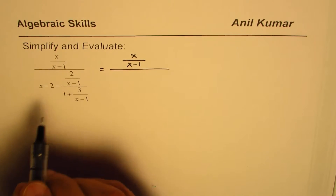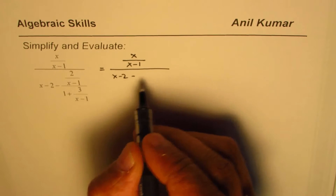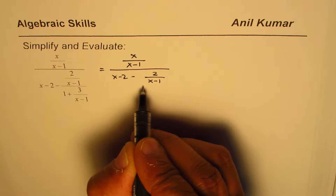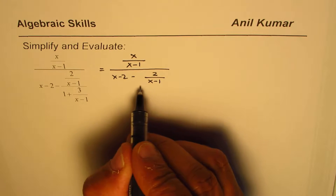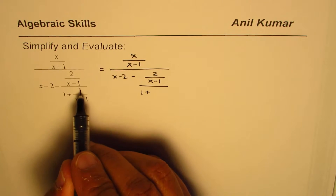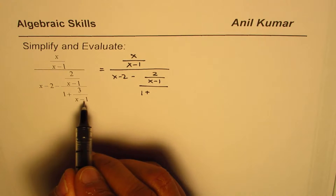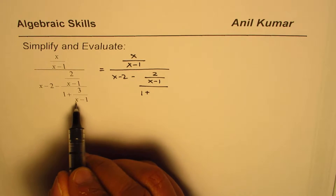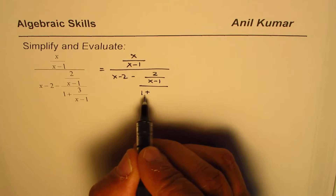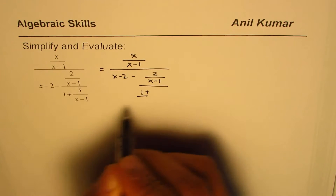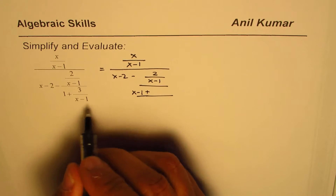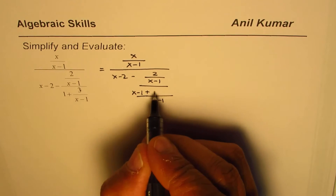Here we have x minus 2 minus 2 over x minus 1, divided by 1 plus 3 over x minus 1. We can take x minus 1 as a common denominator. So 1 gets multiplied by x minus 1. We could write this as x minus 1 over — taking x minus 1 as a common denominator, we get x minus 1 as the common denominator and 3.